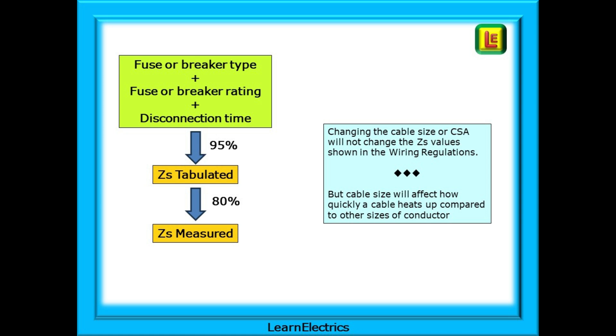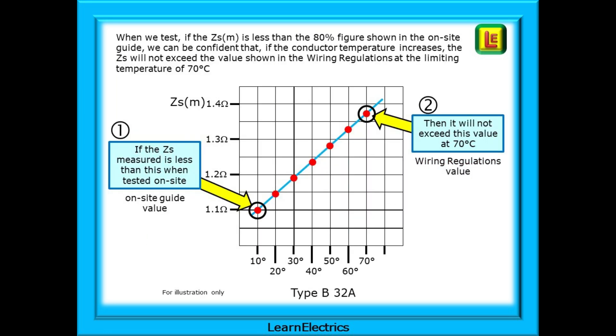Be aware that changing the cable size or CSA will not change the ZS values in the wiring regulations. They are determined by the fuse or breaker. But cable size will affect how quickly a cable heats up compared to other sizes of conductor so it pays to always install the correct size cable for the circuit being worked on.